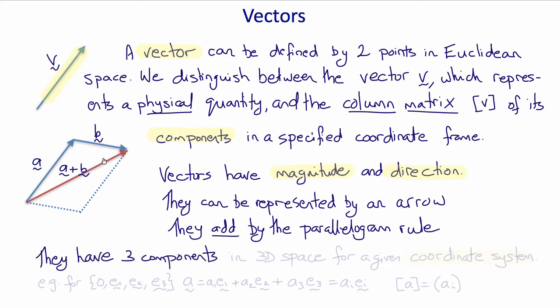Vectors have three components in three-dimensional space for a given coordinate system. For example, with the coordinate system with origin o and unit vectors e1, e2 and e3, the vector a can be written as a equals a1 e1 plus a2 e2 plus a3 e3, or using index notation and the summation convention ai ei.